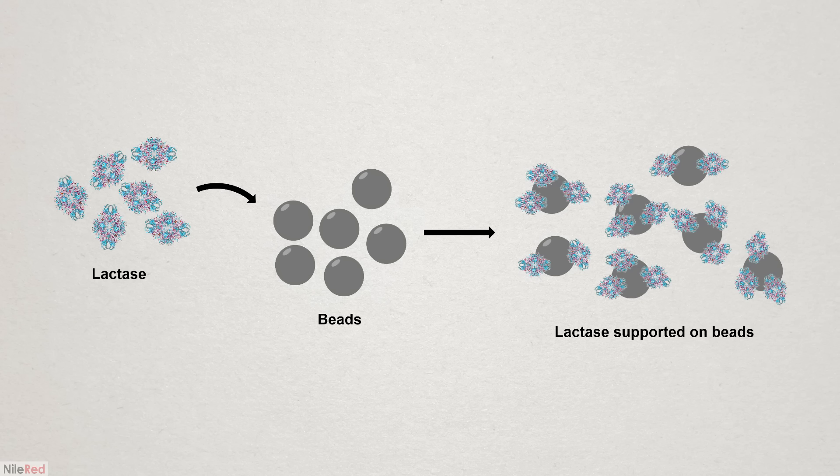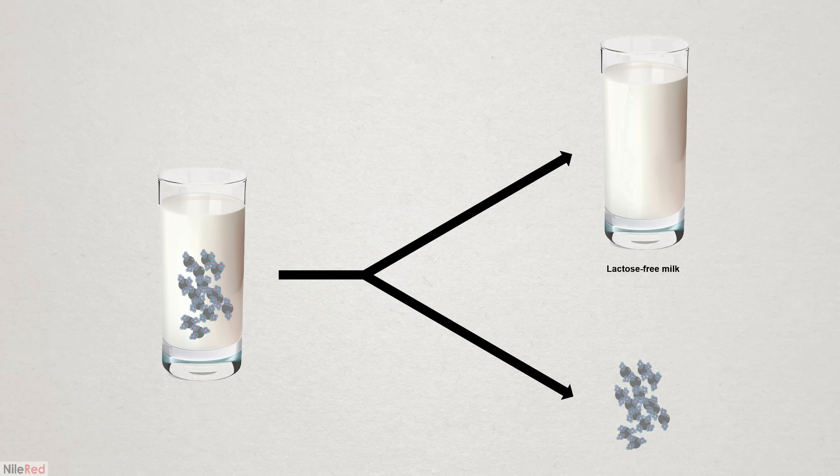At first, this might sound complicated, but it basically just means attaching the enzyme to something solid, so it can be easily recovered and separated from the milk.